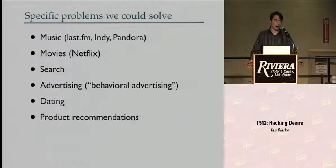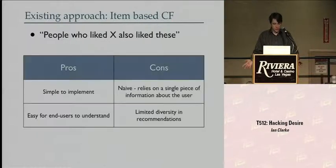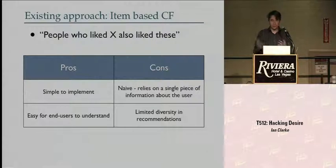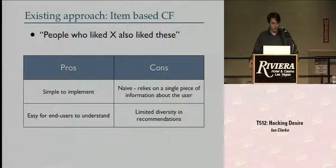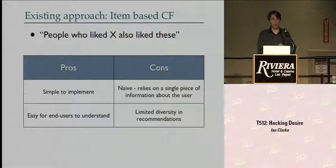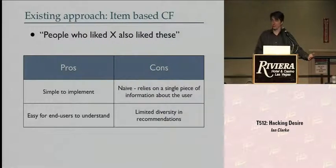What are the common approaches to this problem today? The simplest one is item-based collaborative filtering. Typically, the people are called users, and the things being recommended — whether music, movies, or whatever — are called items. An item-based collaborative filter looks for similar items, typically on the basis that many people who liked this thing also liked that thing. If you express an interest in a certain item, it recommends other items it thinks are similar.